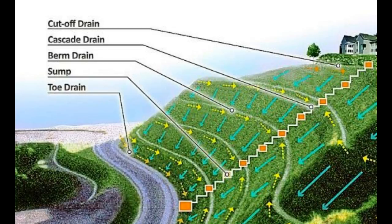Berm drains are built at the toe of each berm to collect and regulate the water flowing along the cut slopes. Toe drains are built at embankment toe level to regulate the water flow.